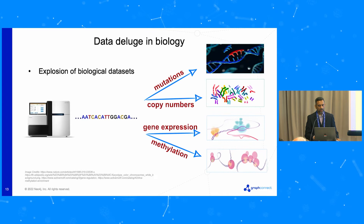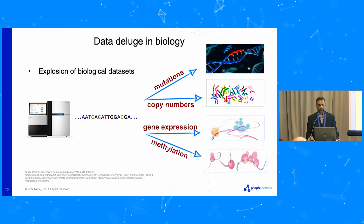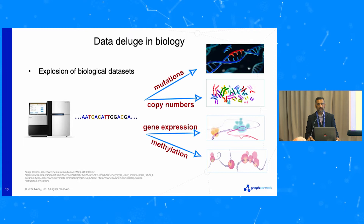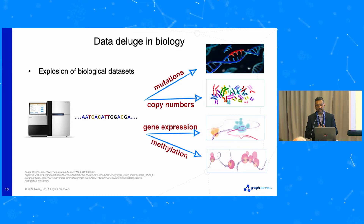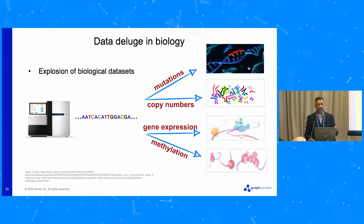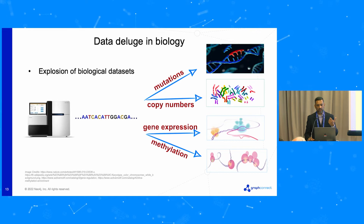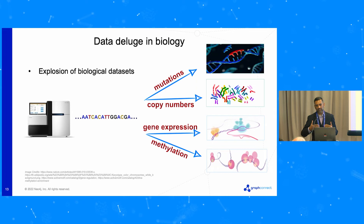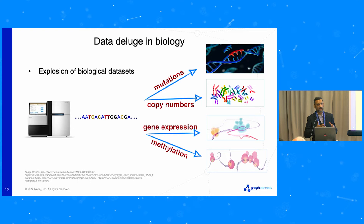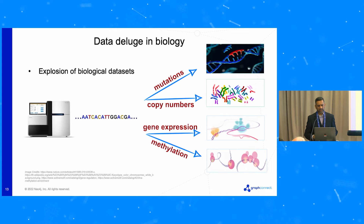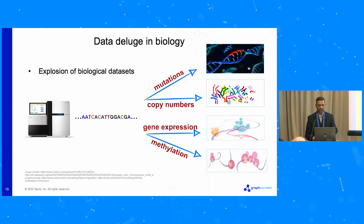This has become a data explosion in biology. Once we figured out how exactly the sequences are, we can identify mutations. You just put DNA in a machine — after the preliminary lab work — and it will spit out all the mutations, copy numbers (the number of copies of genes, which in cancer are often multiple), gene expression by sequencing the mRNA, and methylation. There are structural variants and many other things that could be done using this next-generation sequencing technology.